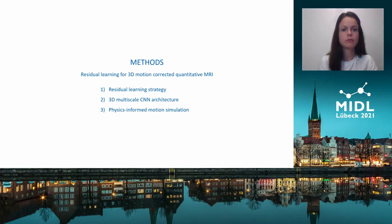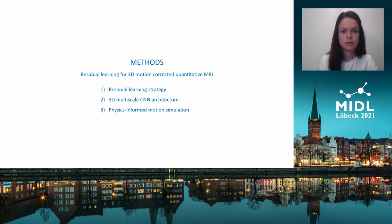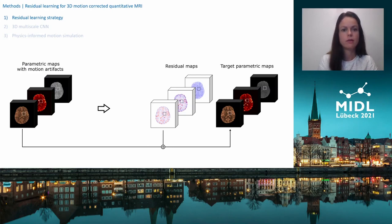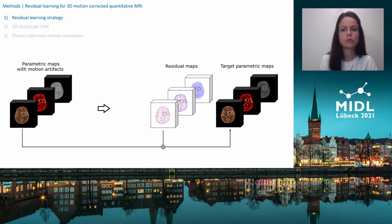To address this, we propose a residual learning approach for 3D motion-corrected quantitative MRI, comprising three key features. Instead of a direct mapping from the motion-corrupted to the motion-free parameter domain, residual learning allows us to transfer the inference task to a more sparse representation of the artifacts — the residual domain. The predicted residual maps can then be used to retrieve the targeted motion-corrected parameter maps.